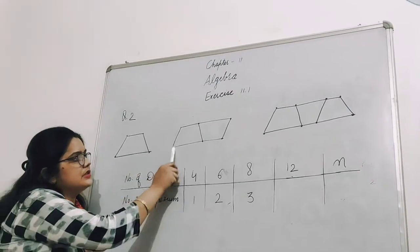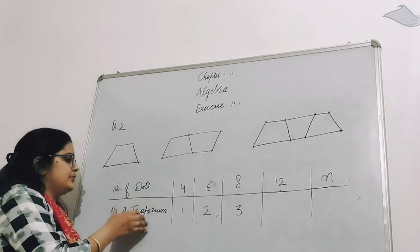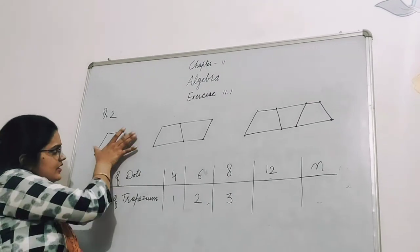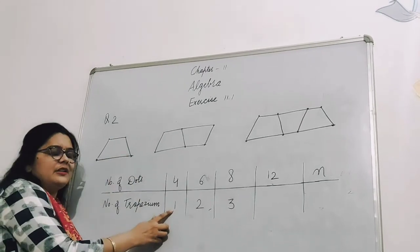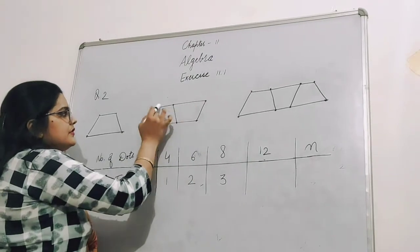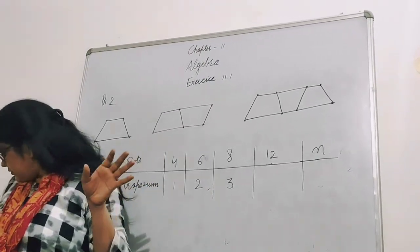In the second portion, observe these figures. They are given this table showing number of dots: 4 dots, 6 dots. This first figure we call trapezium. One trapezium is completed. Now 1, 2, 3, 4, 5, 6 - six dots, then two trapeziums completed.